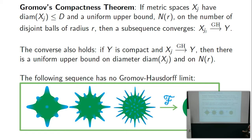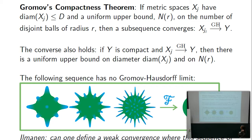However, one would like this sequence to converge in some notion to a sphere. Tom Illman proposed — for purposes of general relativity — that three-dimensional spheres with non-negative scalar curvature should converge to a sphere in some weak notion of convergence. He proposed that in 2004.